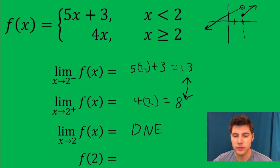And the last one is the actual function value at 2. So when it's 2, we use the bottom function. So it's going to be 4 times 2, and that equals 8. So these are the answers to each of them.